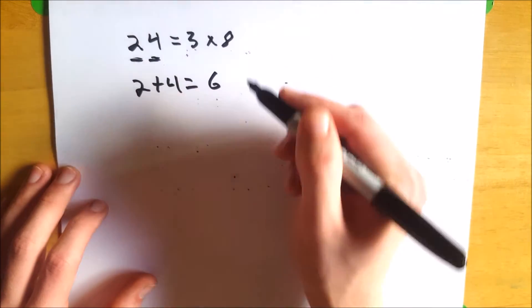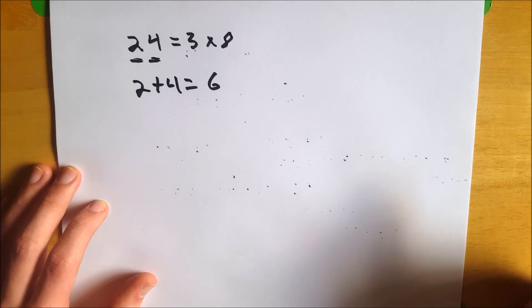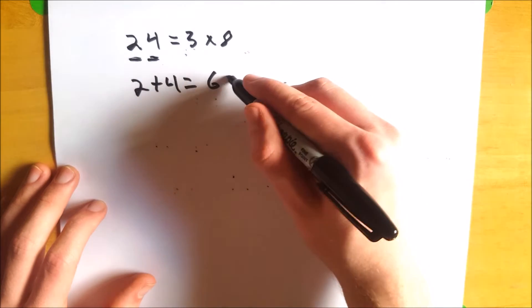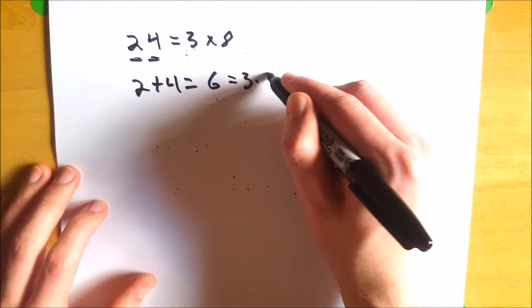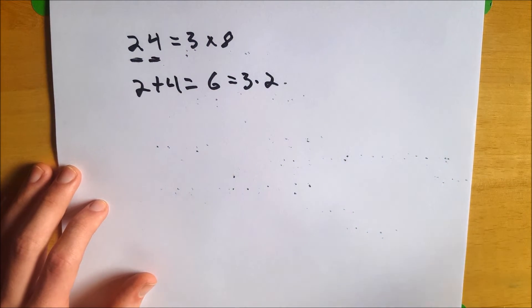And then, if your resulting number is a multiple of 3, then your original number is also a multiple of 3. 6 is a multiple of 3, because it's equal to 3 times 2. Therefore, 24 is a multiple of 3, which is the same thing as saying 24 is divisible by 3.